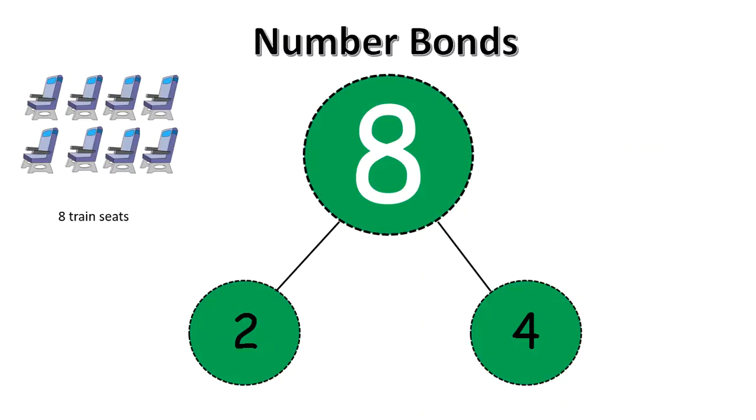Two rows of four train seats equals eight. Two times four equals eight.